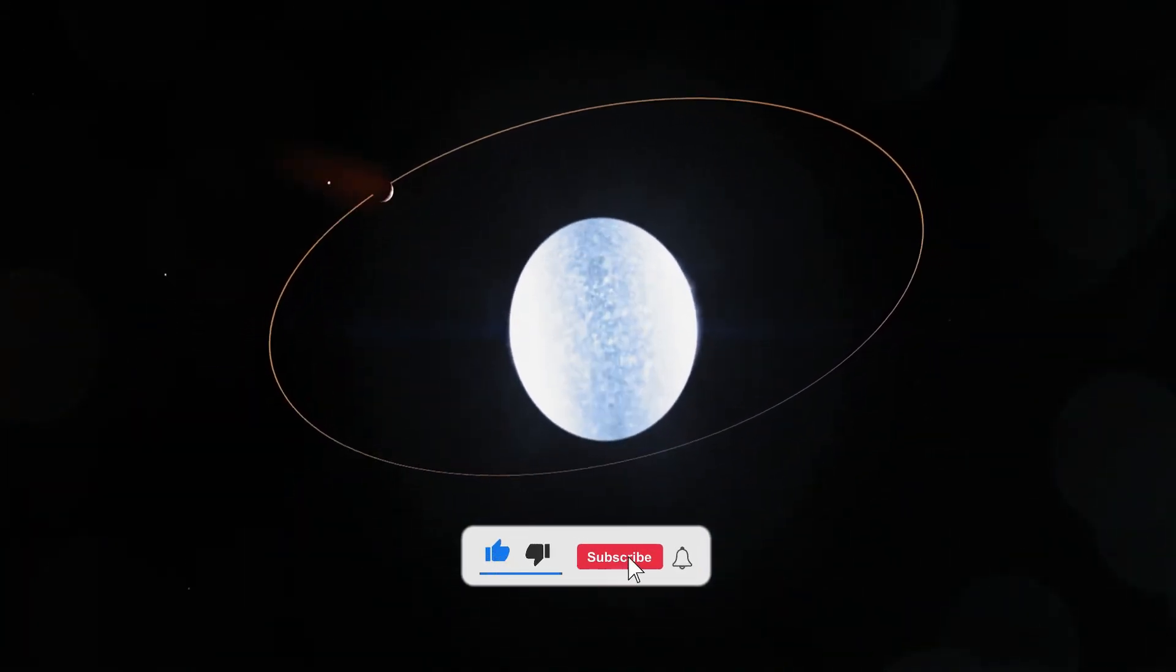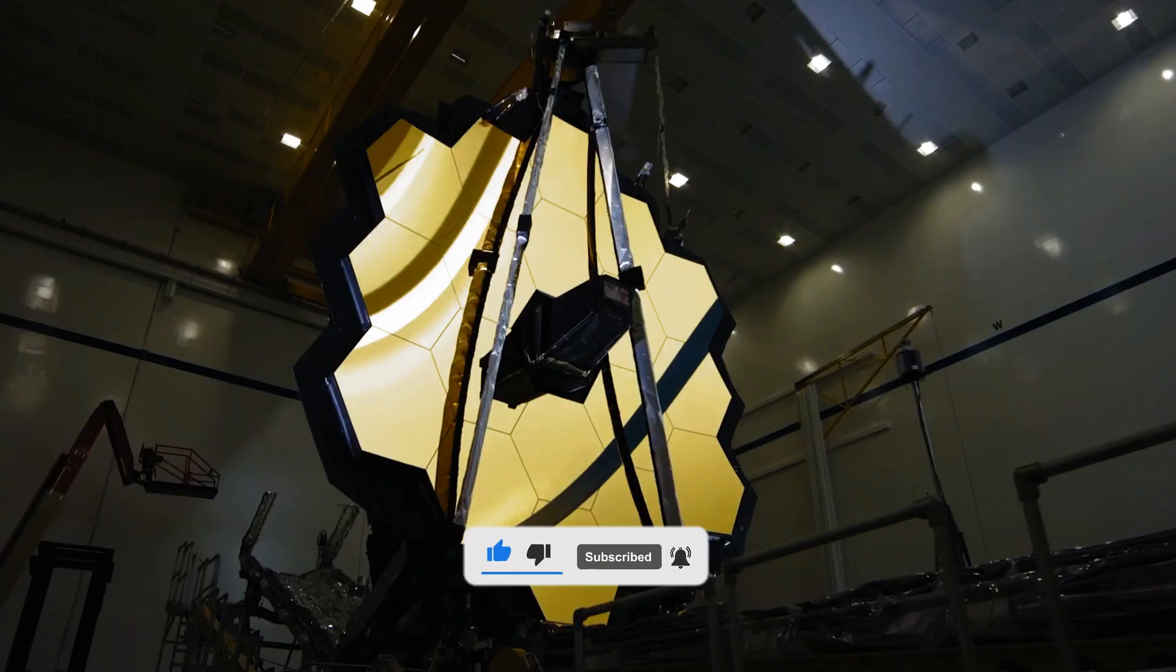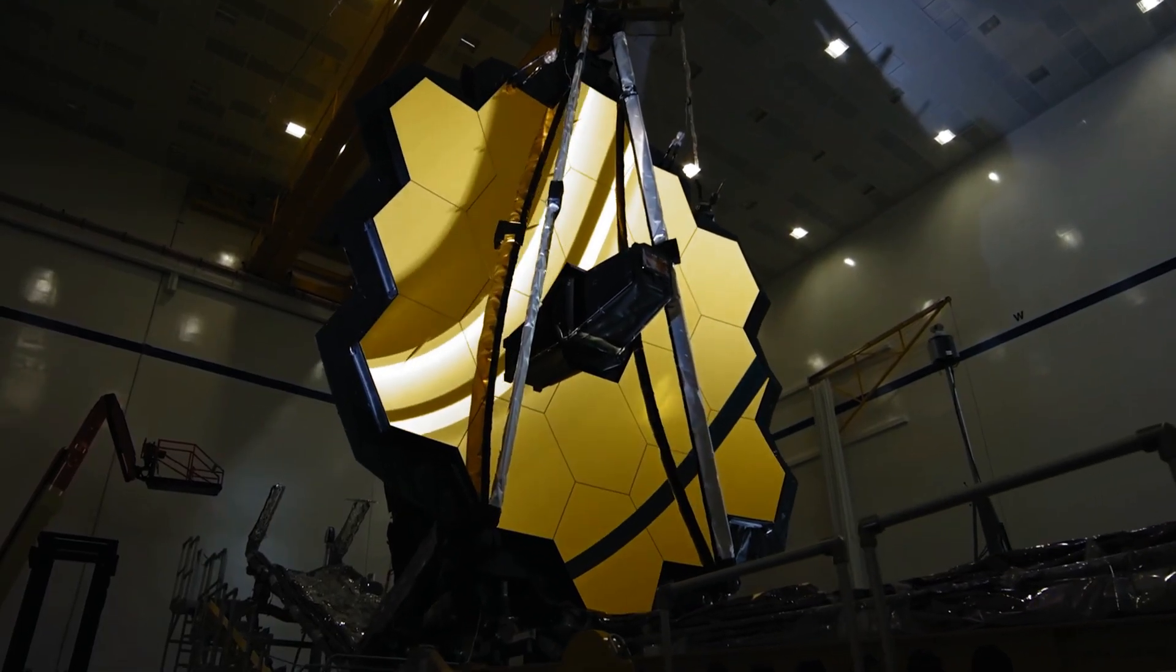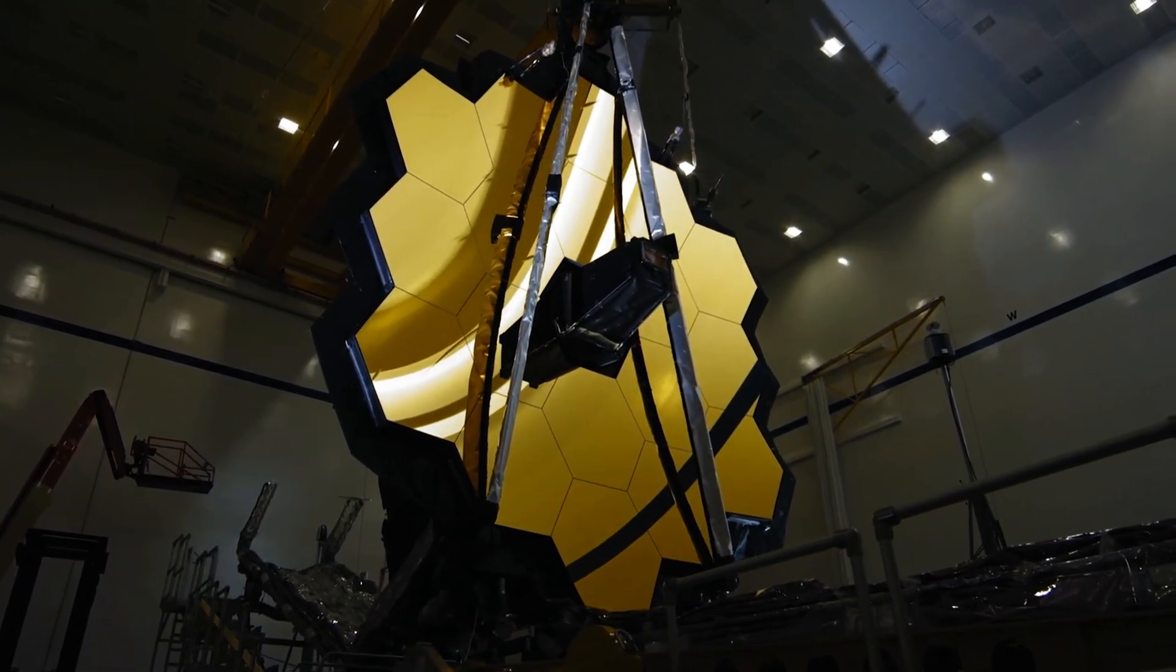The stars which emit the intracluster light follow the gravitational field of the cluster, which makes this light an excellent tracer of the distribution of the dark matter in these structures.